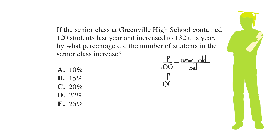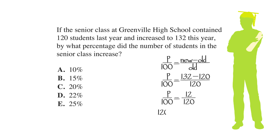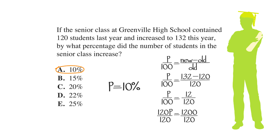Plugging those numbers in, we get p over 100 equals 132 minus 120 over 120. After doing that subtraction, we have p over 100 equals 12 over 120. Cross-multiplying gives 120p equals 1,200. Dividing each side by 120, we get p equals 10%, which is choice A.